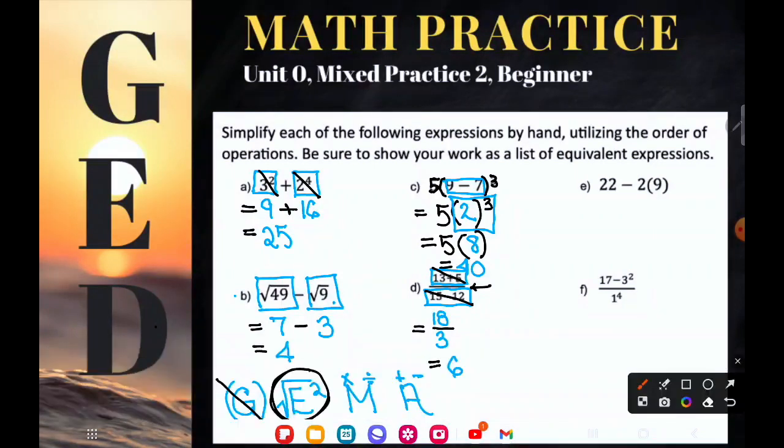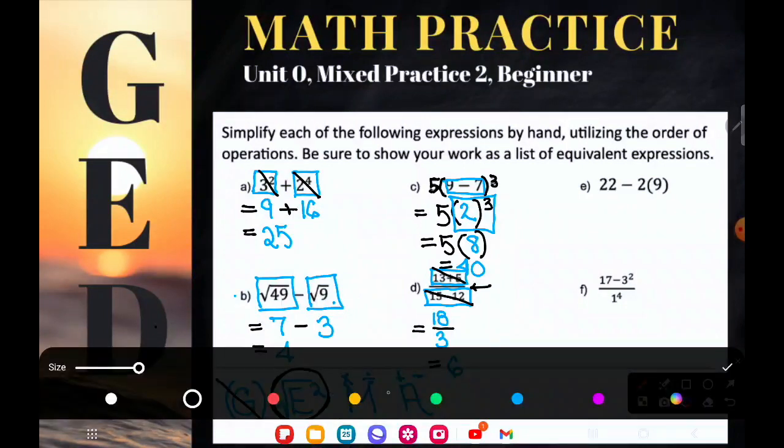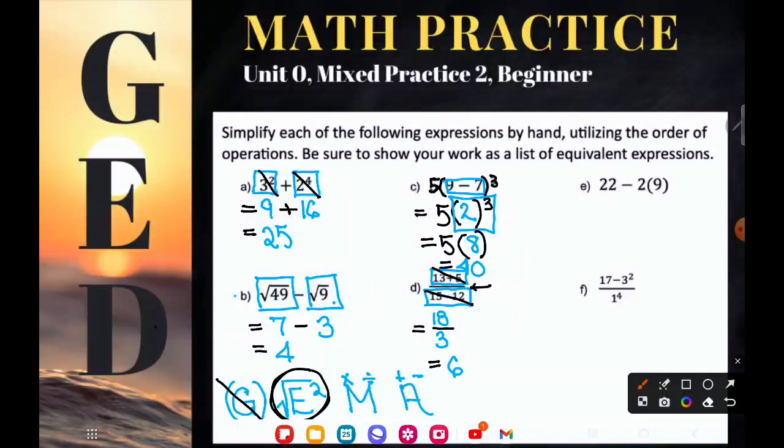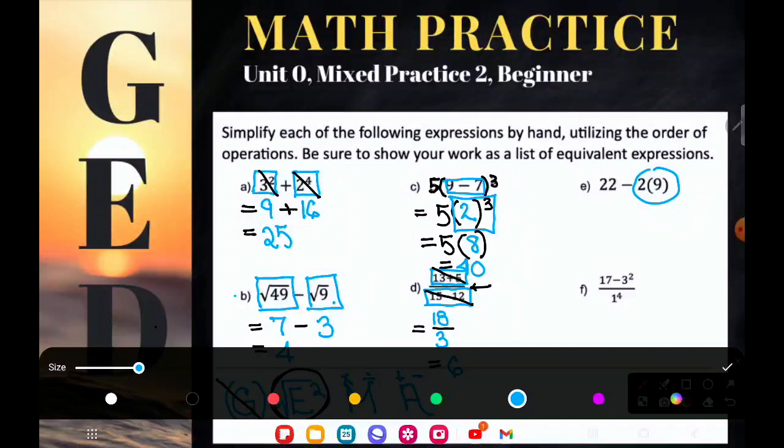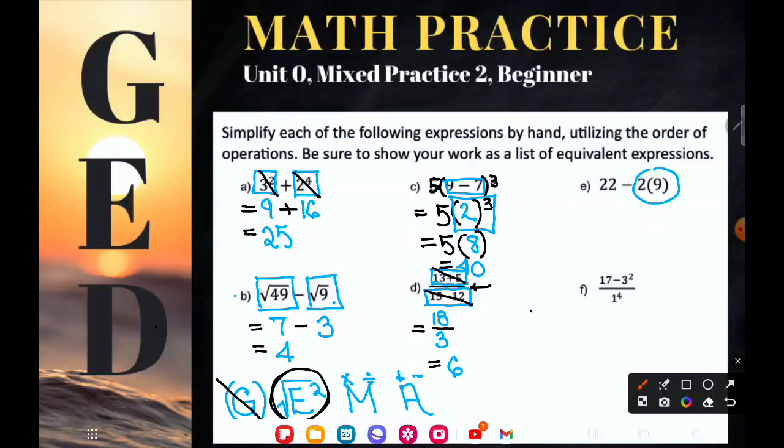All right. So looking at E, 22 minus two times nine. Now, students do an interesting thing. They will be really good at the order of operations, and suddenly they'll brain fart on a simple little example like this. But please remember that multiplication comes before subtraction. Now you might say, well, of course, that's parentheses, Kate. No, the first step is groupings, not parentheses. But I am going to do two times nine first, not because there's parentheses, but because multiplication happens before addition subtraction. So two times nine is 18.